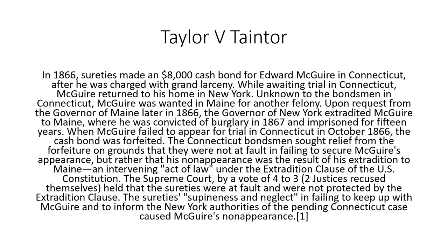In Tanner versus Taylor, in 1866, sureties made an $8,000 cash bond for Edward McGuire in Connecticut after he was charged with grand larceny while awaiting trial. McGuire returned to his home in New York. Unknown to the bondsman, McGuire was wanted in Maine for another felony. Upon request from the governor of Maine, the governor of New York extradited McGuire to Maine, where he was convicted of burglary in 1867 and imprisoned for 15 years.